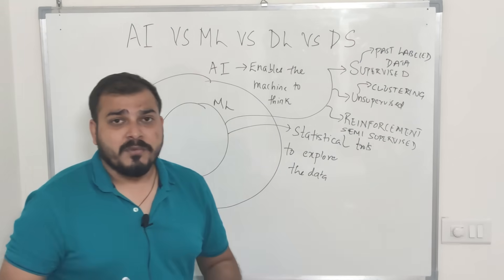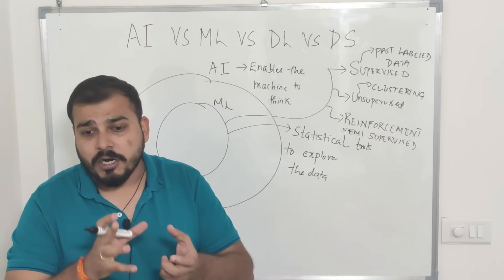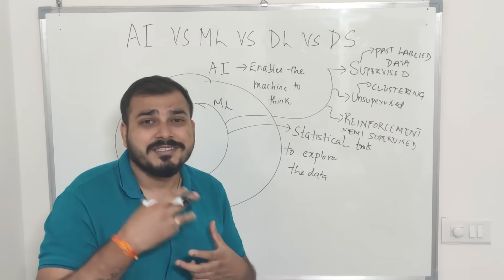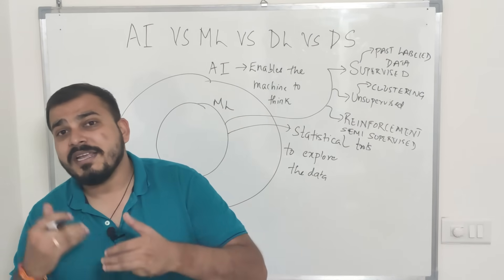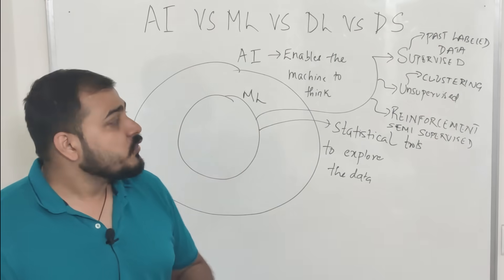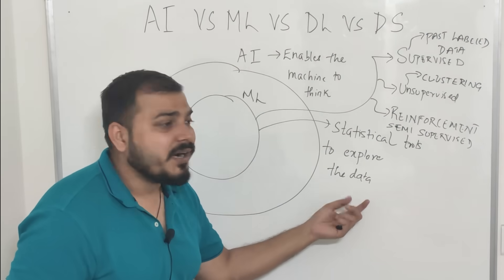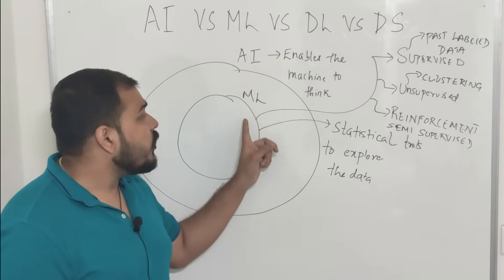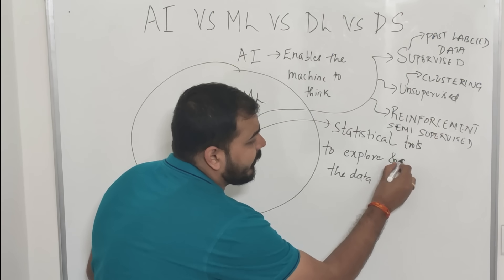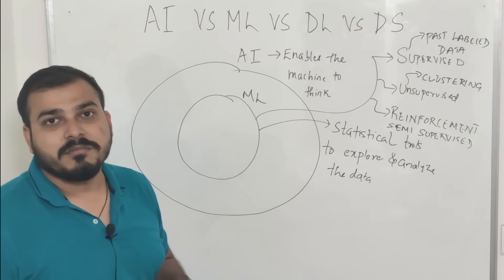In reinforcement learning, some part of your data will be labeled and some part will not be labeled. The machine learning model learns slowly by seeing past data, and continues learning as new data comes in. The most important part is that we need to have data. Machine learning provides statistical tools to explore and analyze the data.